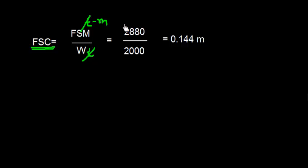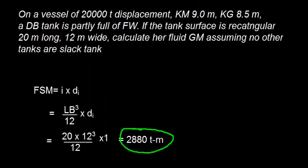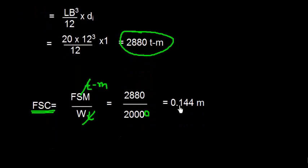We have the Free Surface Moment which is 2880 ton-meters, and the displacement is 20,000 tons as given in the question. So I use this data and I get the FSC value as 0.144 meters. It's useful to have this in three decimal places.